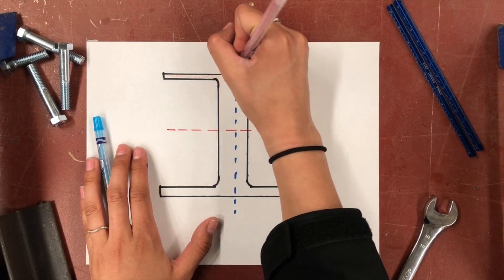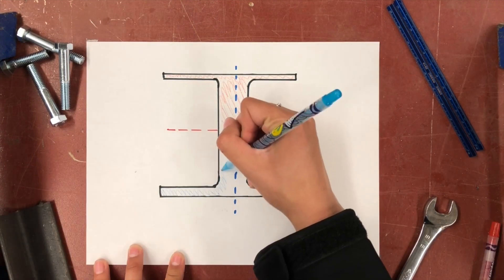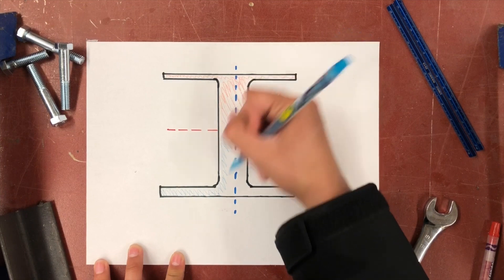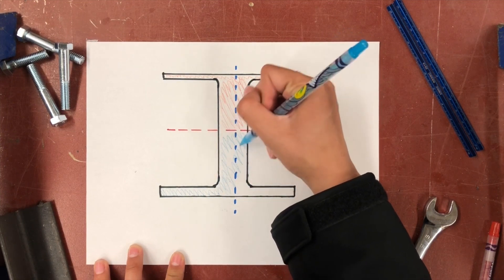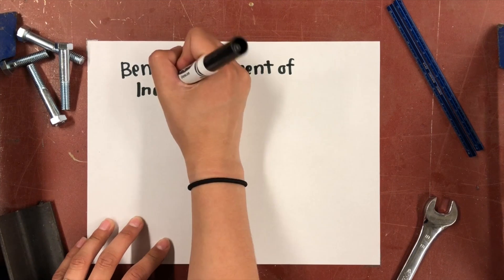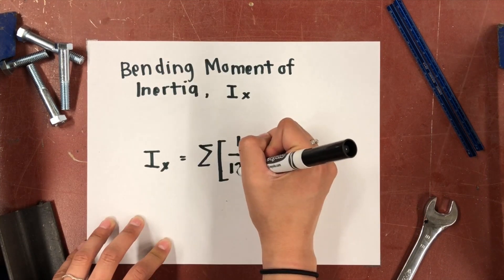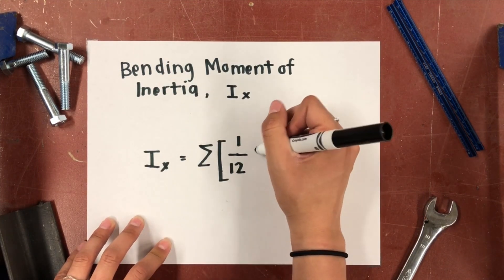First, let's start with the neutral axis. As you know, this is the axis in which there are no longitudinal stresses or strains, and it is the divide between a member's tension and compression side. Now, what does that mean in steel design? Well, once you can calculate the neutral axis of your member, it allows you to find your moment of inertia for your different axes.